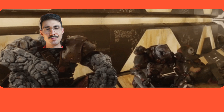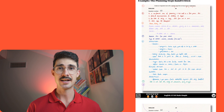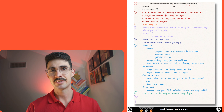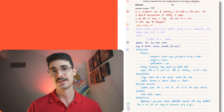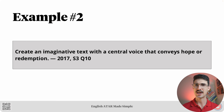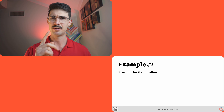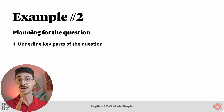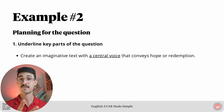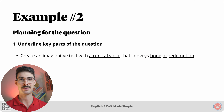Here's example two. There is a handwritten version of the plan in the PDF activities for this lesson. The question is: create an imaginative text with a central voice that conveys hope or redemption. Step one, underline key parts: 'a central voice,' 'hope,' 'or,' and 'redemption.' Step two, define those key parts: 'a central voice' suggests the text should utilise first person central POV, since voice refers to a sense of personality and 'central' is synonymous with main or dominant. 'Hope' is defined as a feeling of expectation and desire for a particular thing to happen. 'Redemption' is defined as the action of saving or being saved from sin, error, or evil. The word 'or' means we must clearly convey hope or redemption — not both.